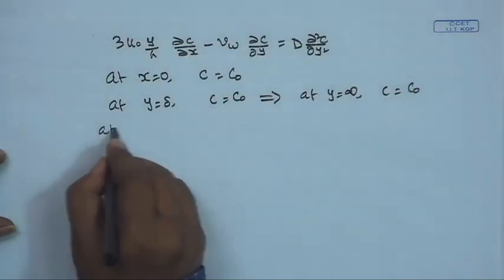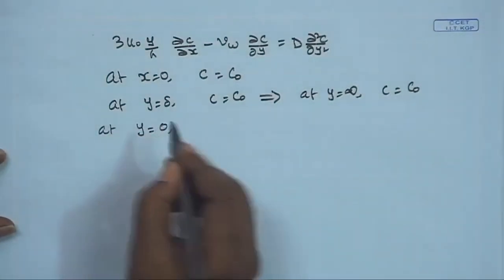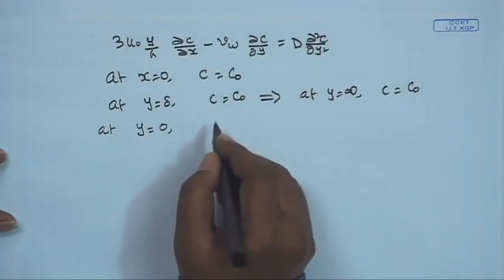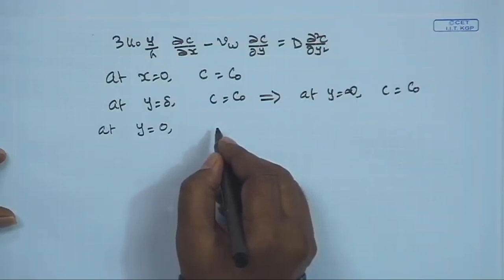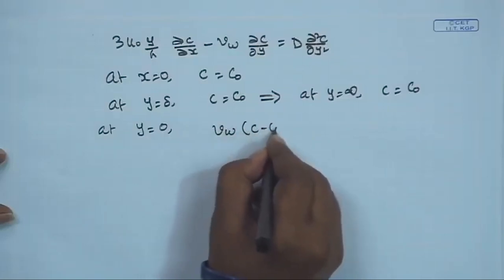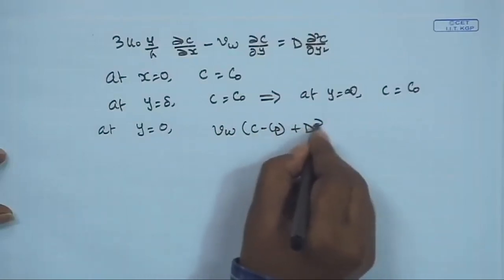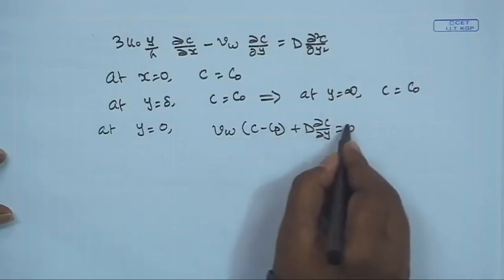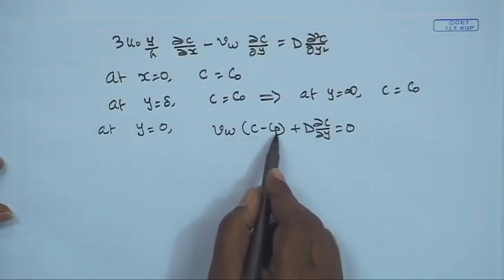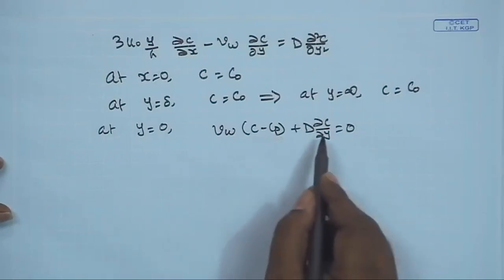We need one more boundary condition on y because the equation is second order with respect to y. At y = 0, at steady state, all solute fluxes towards the membrane will be equal to zero. This gives: vw·c − cp + D(∂c/∂y) = 0, where the first term is the convective solute flux towards the membrane, the second term is the convective solute flux away from the membrane, and the third is the diffusive solute flux away from the membrane.